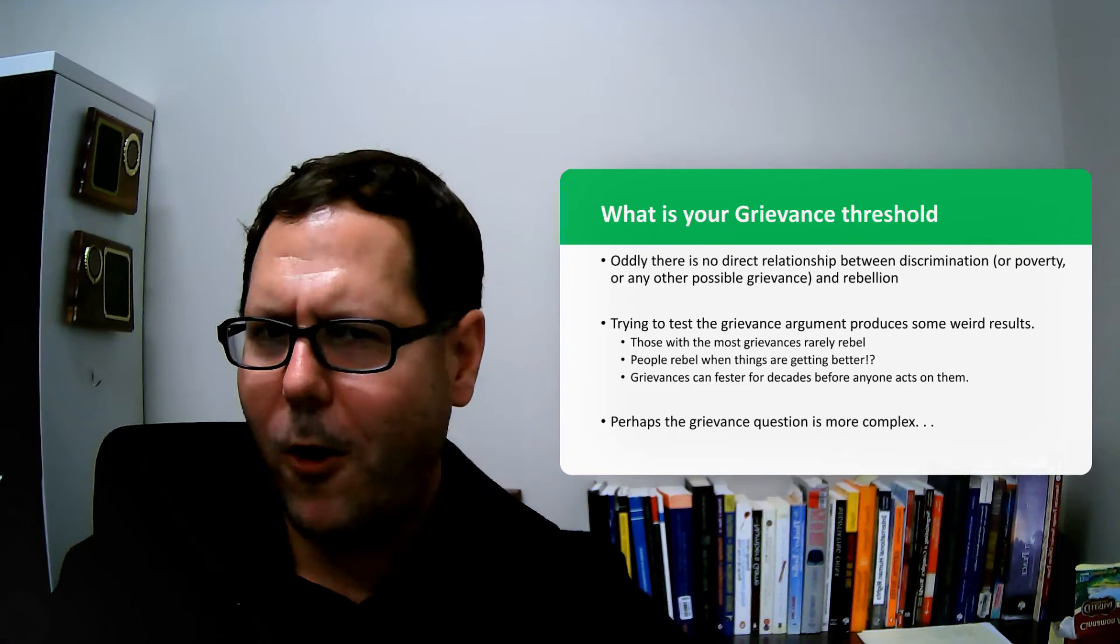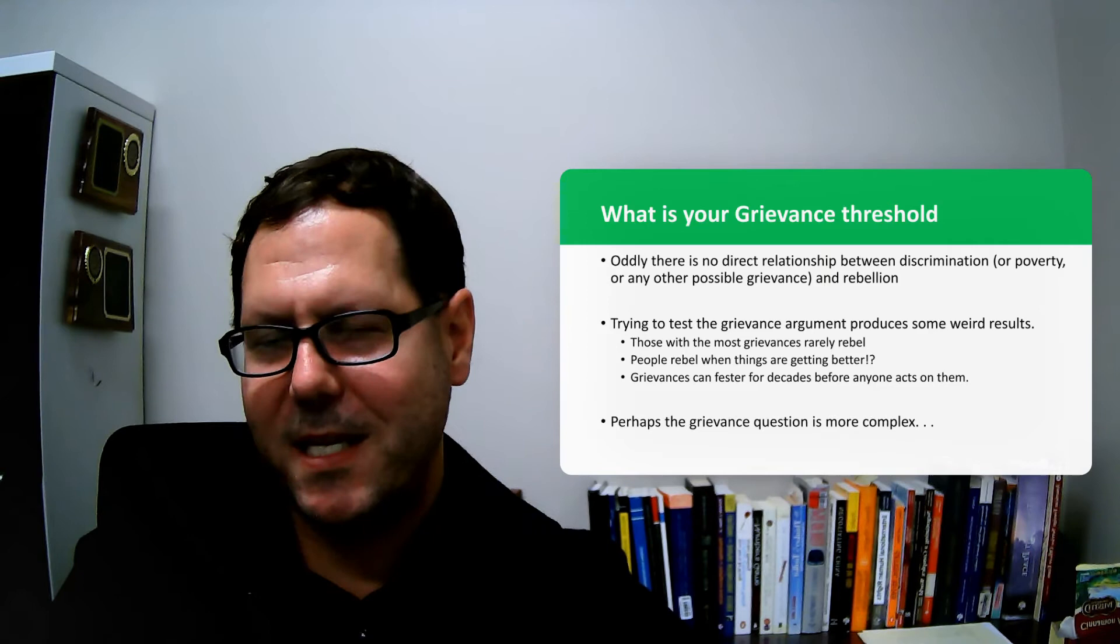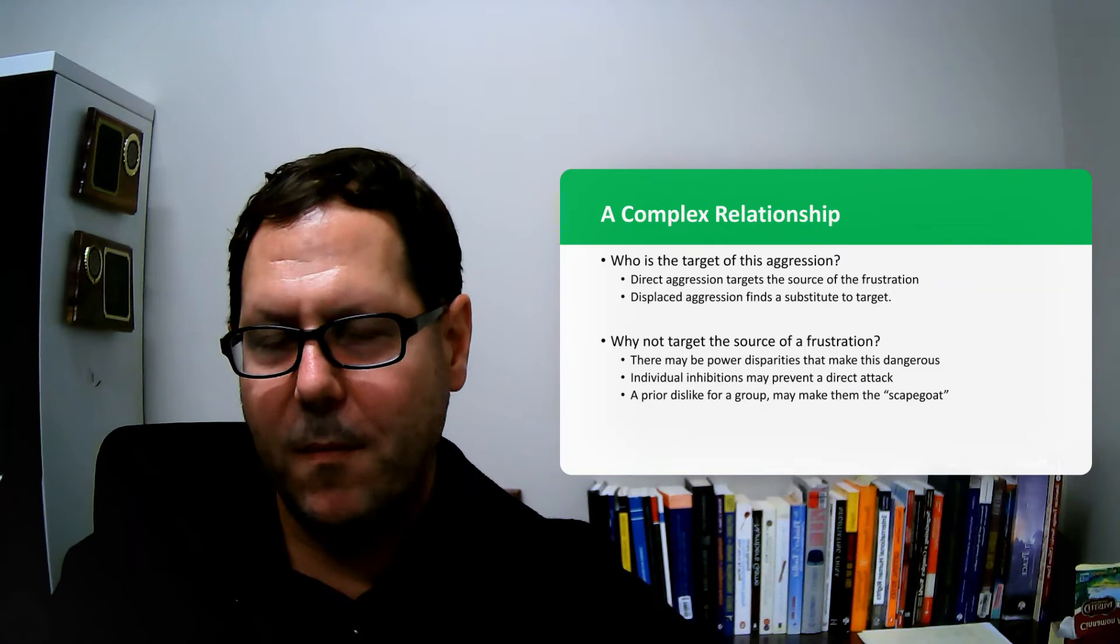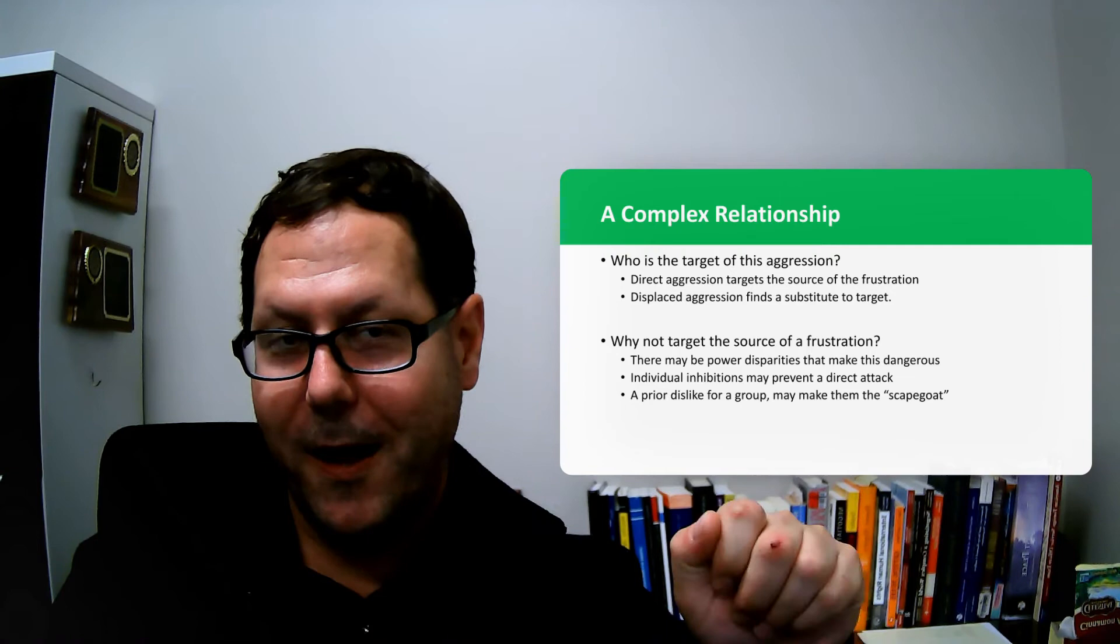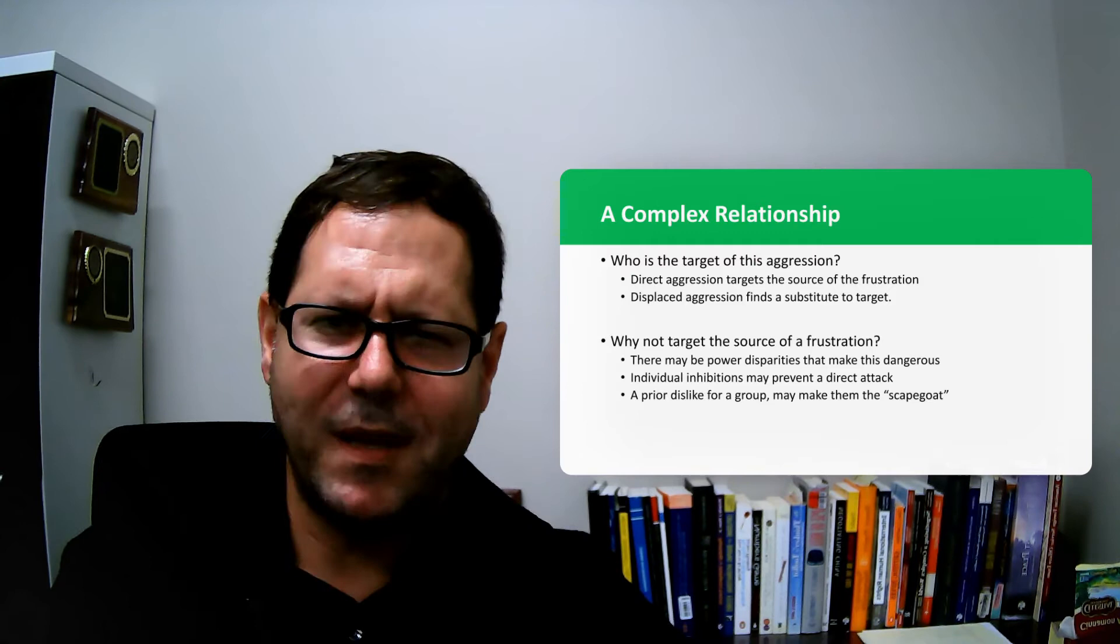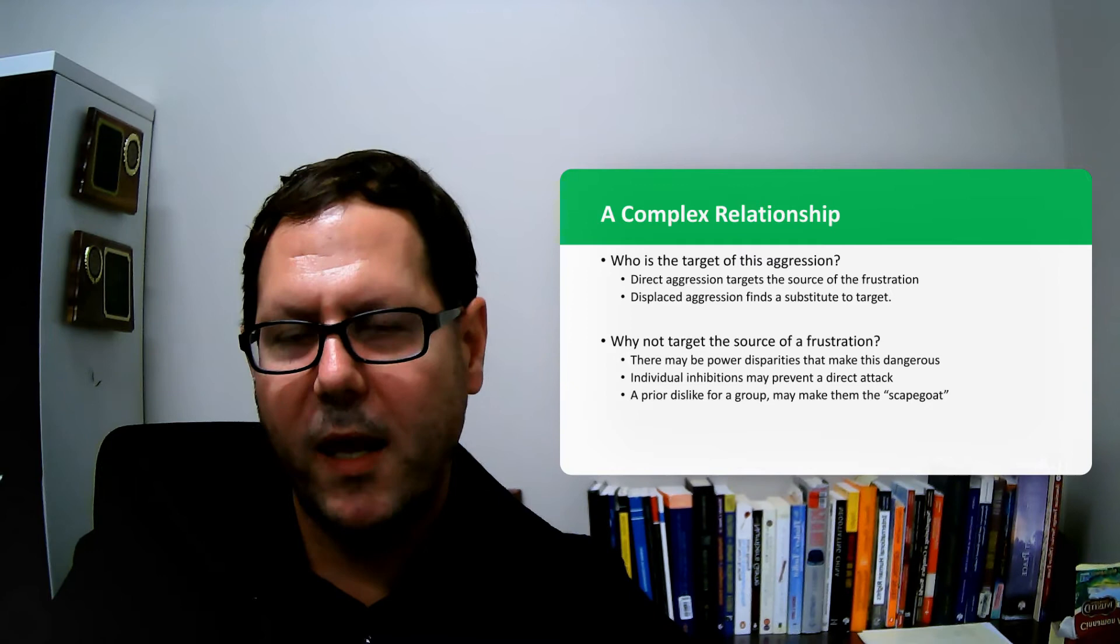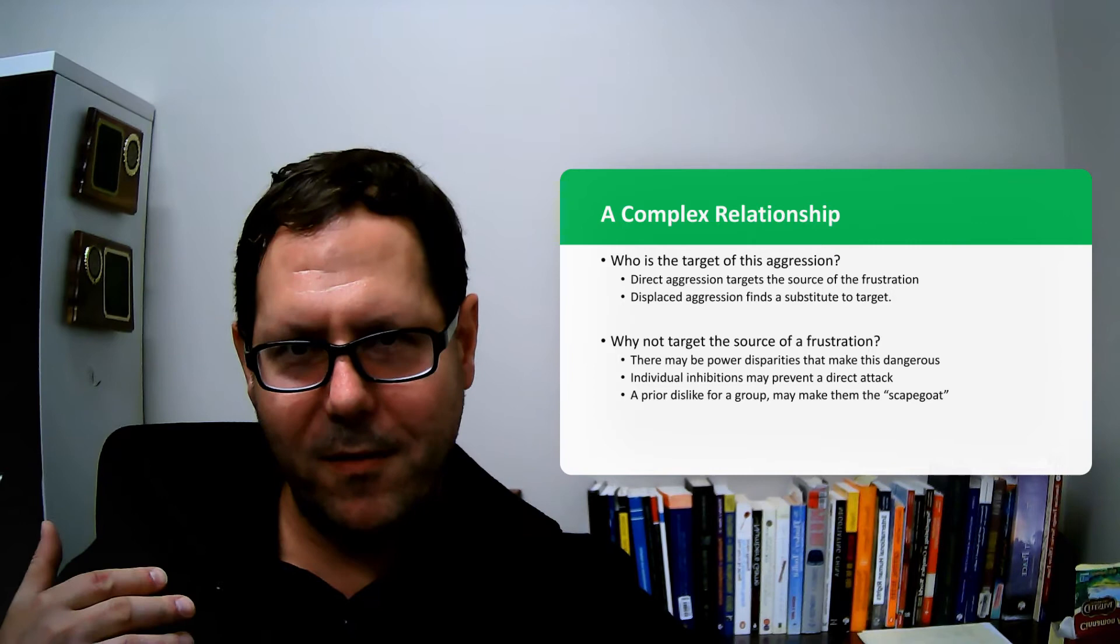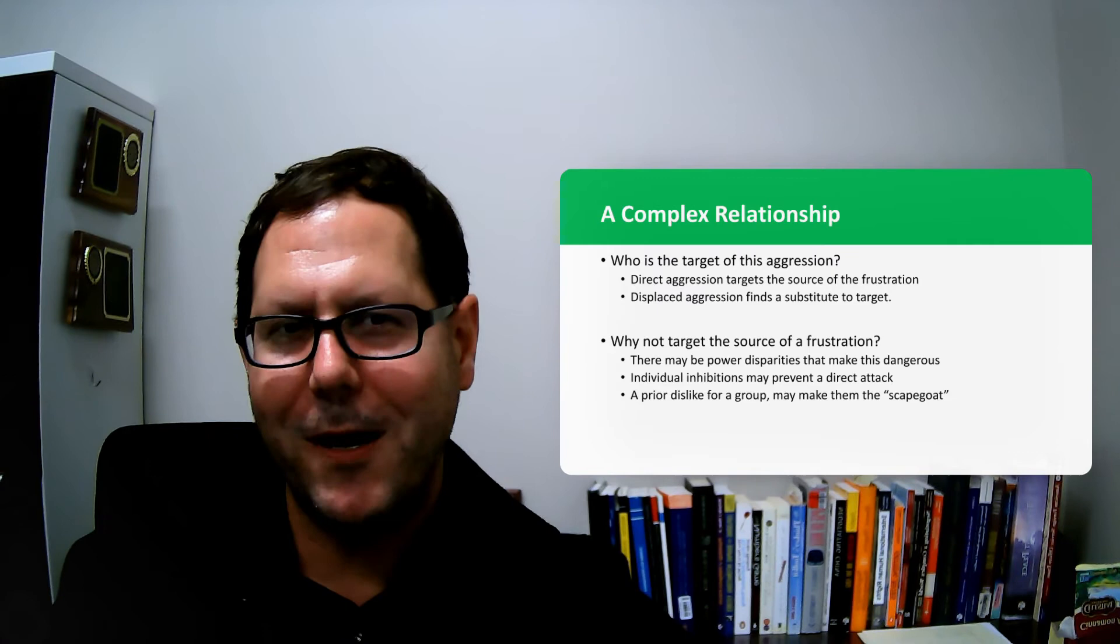One argument is that yes, grievances are part of the story and an important part, but it's a complex story. We have to build in other pieces for it to work effectively. One of those pieces is this question of who to target with aggression. It might not be safe to lash out at the source of your grievance—that source may have power. The canonical story is the boss yells at the employee, the employee comes home and yells at the kid, and the kid goes and kicks the dog. That would be an example of displaced aggression, where each step along that chain the person is looking for a safe outlet to vent that aggression.